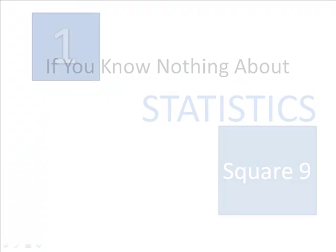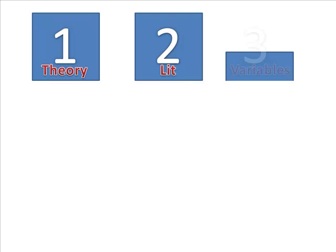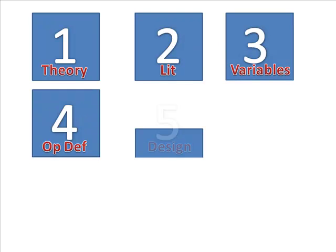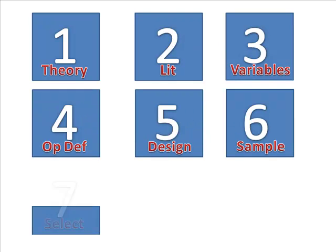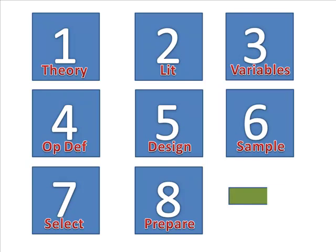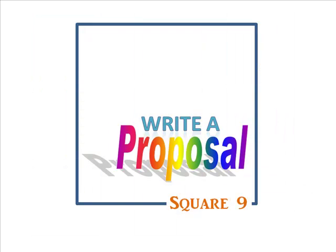The first eight squares were getting you ready to conduct your study. You worked your way from a theory to a totally planned experiment. You have everything you need, except permission.